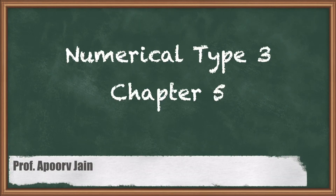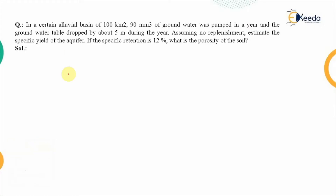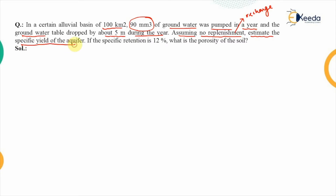Hello everyone. In this video we are going to discuss the third type of numerical based on the chapter of groundwater. The first problem states that in a certain alluvial basin of 100 square kilometer area, 90 million cubic meter of groundwater was pumped in a year, and because of that the groundwater table dropped by 5 meters during the entire year. Assuming no replenishment — that means no recharge — estimate the specific yield of the aquifer.